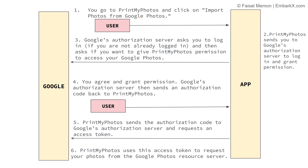This is the complete step-by-step flow. Three entities are involved: the Google server, the user, and the application — in our case, Print My Photos, though it could be any application. I hope you're clear on the OAuth flow, its need, and what problem it solves.